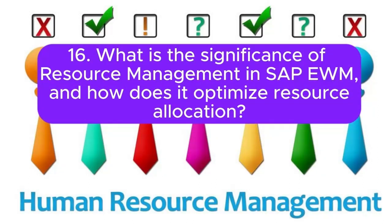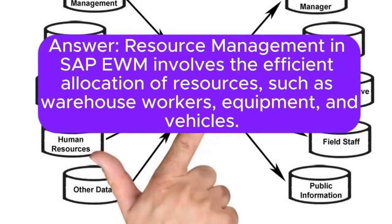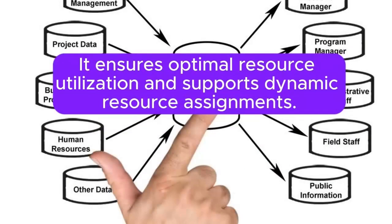Question 16: What is the significance of resource management in SAP EWM and how does it optimize resource allocation? Resource management in SAP EWM involves the efficient allocation of resources such as warehouse workers, equipment, and vehicles. It ensures optimal resource utilization and supports dynamic resource assignments.